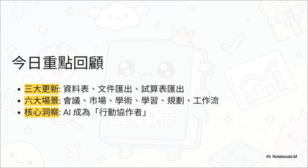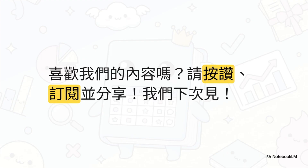好，让我们快速回顾一下今天的重点。第一，我们解析了NotebookLM的三大核心更新，也就是资料表生成、文件汇出，还有试算表汇出。第二，我们实际看了六个超强的应用场景，从开会、做研究到生活规划，可以说是无所不包。最后也是最重要的，我们看到了AI正在转变为我们的行动协作者这个大趋势。